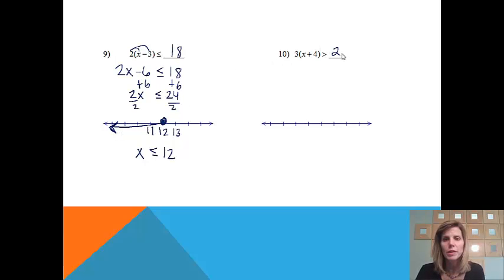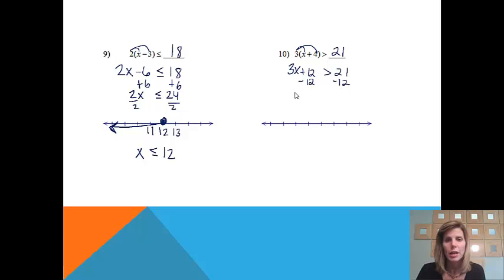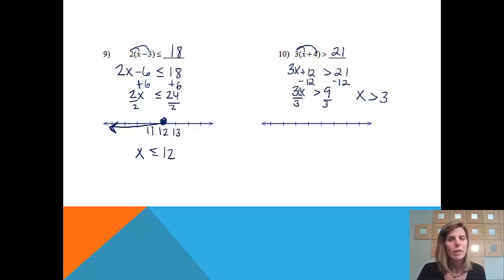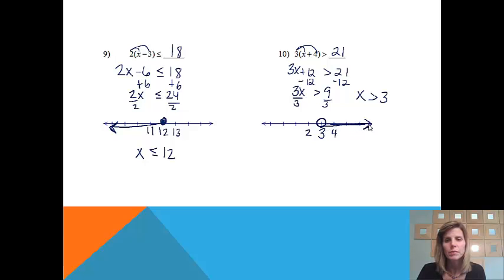Number 10: 3 times (x plus 4) is greater than 21. Please pause the video and practice this problem, then come back. We distribute: 3x plus 12 is greater than 21. Subtract 12 from both sides: 3x is greater than 9. Divide both sides by 3: x is greater than 3. On the number line, start at 3 with an open circle since there's no equal sign, then shade all numbers to the right for greater than.